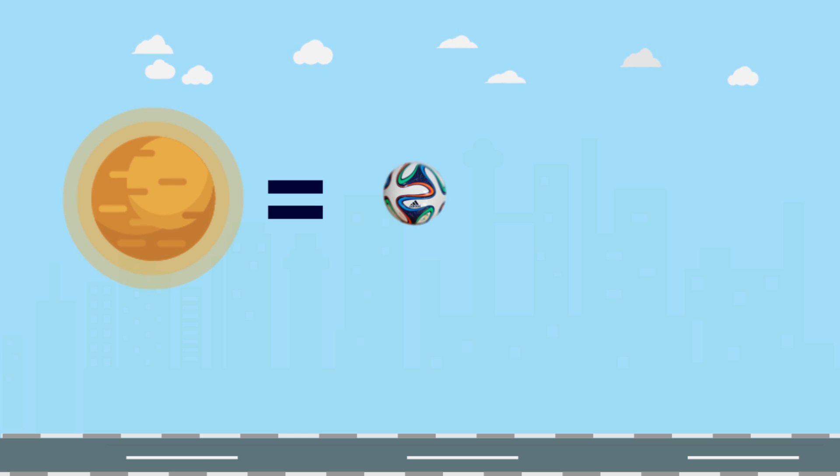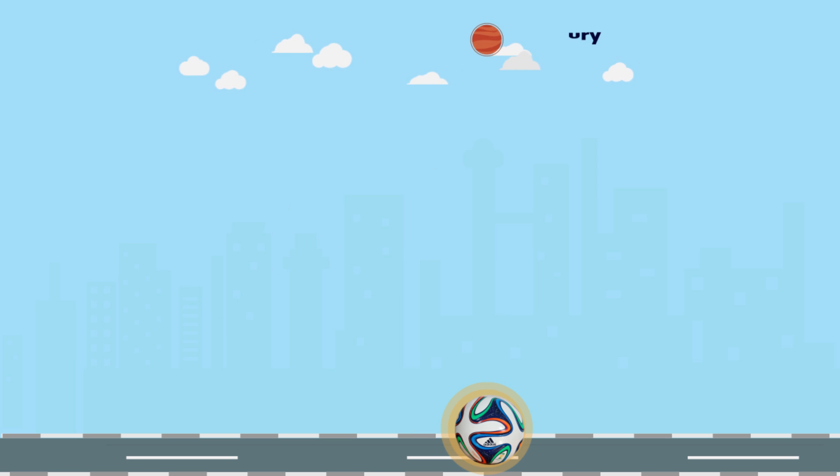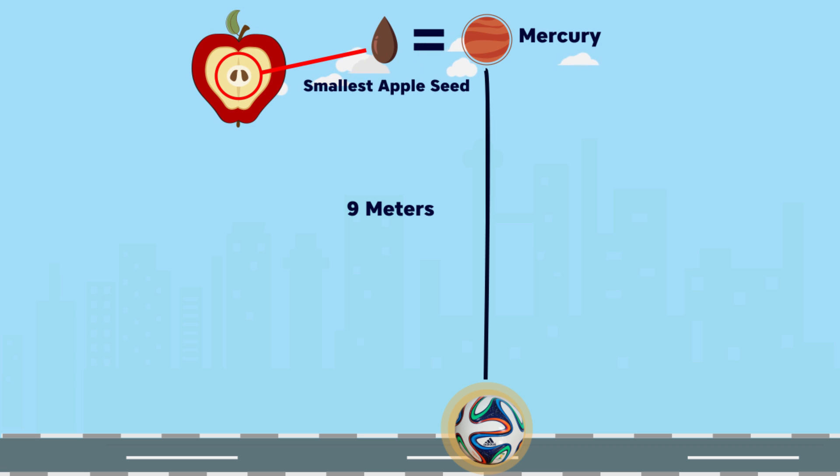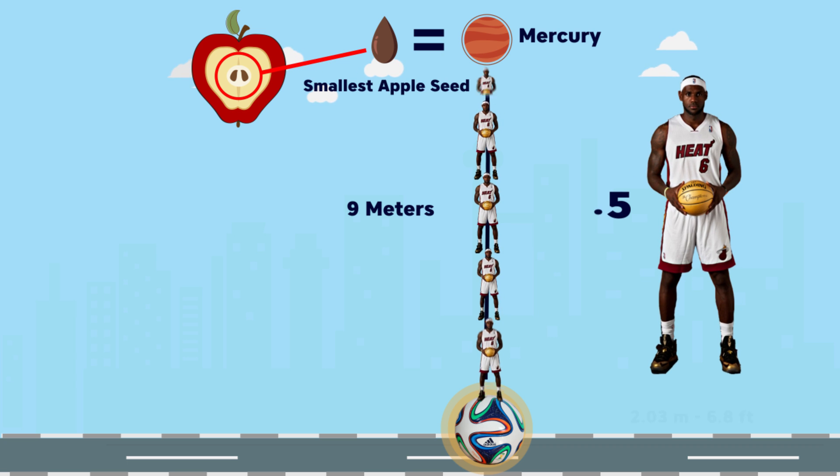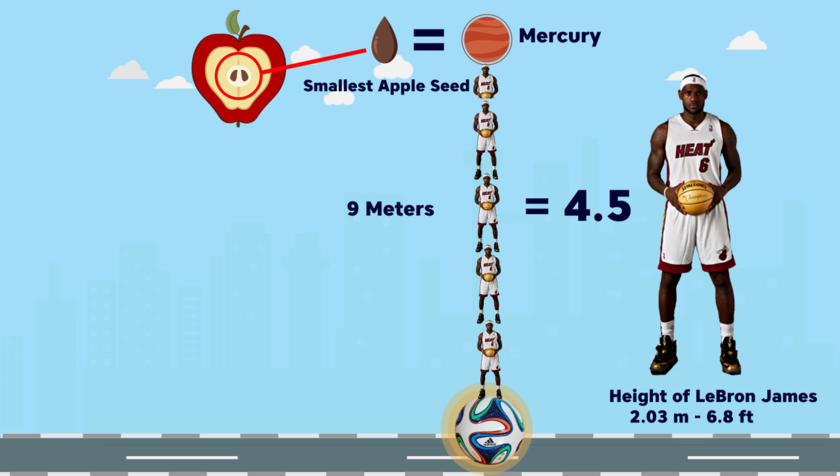Imagine the sun is scaled down to the size of a soccer ball and all the planets respectively. If the ball is on the ground, Mercury will be 9 meters away and with the size of the smallest apple seed imaginable. It's not nearly touching the sun's surface. 9 meters is the height of four and a half LeBron James stacked one on top of another.